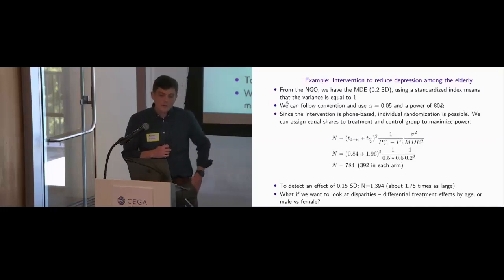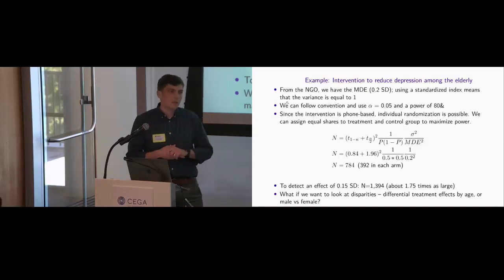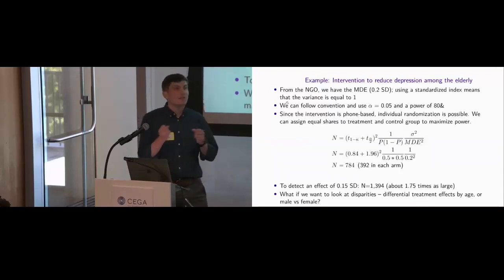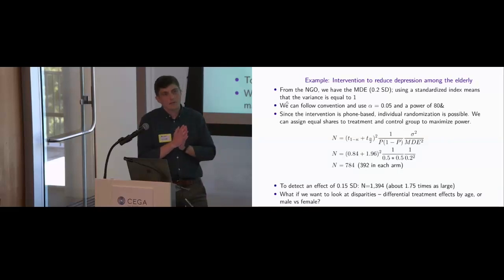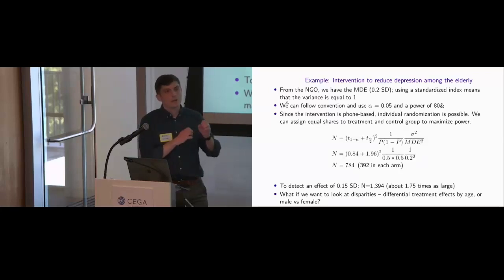Regarding multiple treatment arms: one approach is to say we want to test slightly different nuances between arms, and we primarily want to be powered for the difference between each arm and the control group, but not necessarily between the two treatment groups. So treatment versus control is one set of comparisons, and treatment one versus treatment two is another comparison requiring separate power considerations.